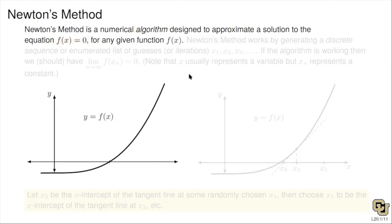The concept of algorithm leads us to the idea of a computer, which has changed our world in ways we can't even believe. And Newton's method — when Newton created this method — it's obvious he understood that one day there would be machines that could do computations, because this method isn't practical to do by hand. So here's how Newton's method works.